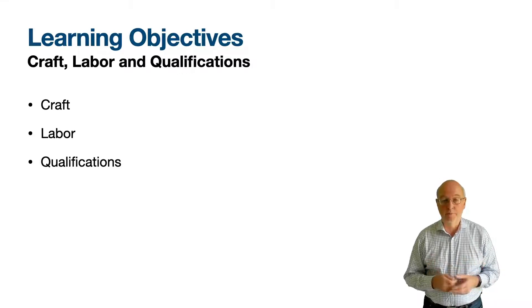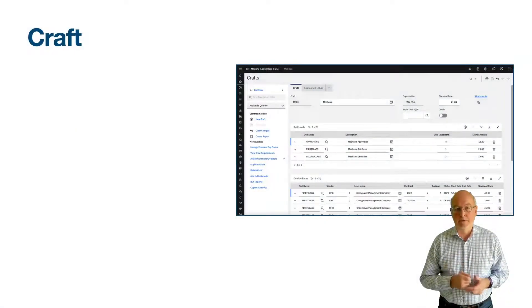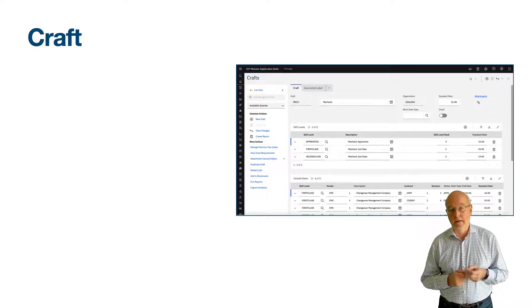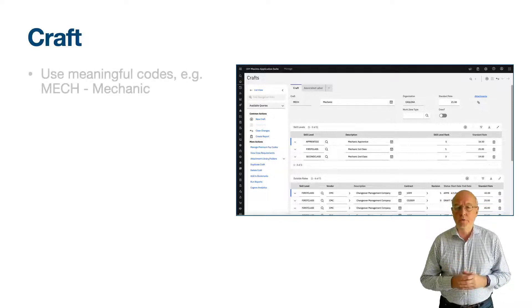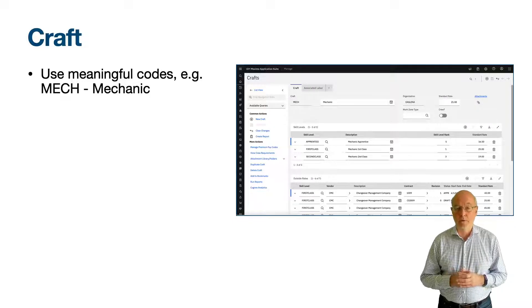There is a lot to go through, so let's get started. Crafts are the disciplines that your workforce possess — the records that define the general skill of people resources that you need for a work order. For example, you might use a code of MEC for a mechanic and ELECT for an electrician.